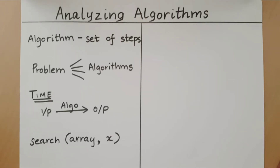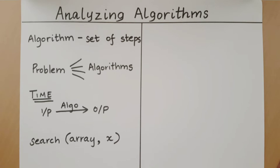So it traverses the array element by element, checking if the element in the array is equal to x. When the element in the array is equal to x, the search will be successful and the algorithm stops. If the element in the array is not equal to x, the algorithm will proceed to the next element in the array. If x is not equal to any of the elements in the array, the search will be returned as unsuccessful.